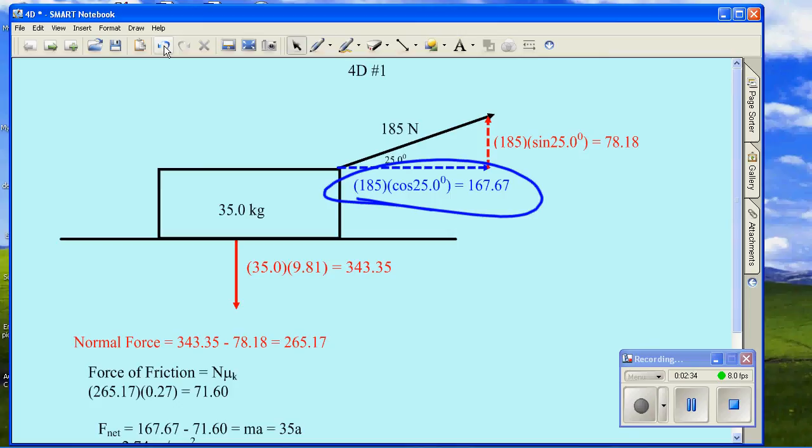Now, I'm told in this problem that I'm pulling on it and it is moving at constant velocity, which of course means that the acceleration has to be zero. Therefore, the net force has to be zero. I'm pulling forward at 167.67, and yet the net force is zero.